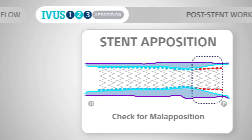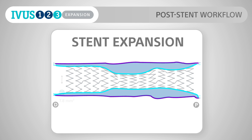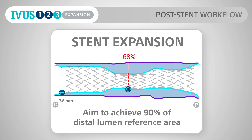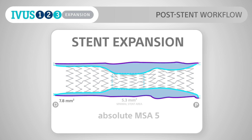Stent expansion: aim to achieve greater than or equal to 90% of the distal lumen reference area. If this is not possible, aim for an absolute MSA of 5 mm squared or greater.